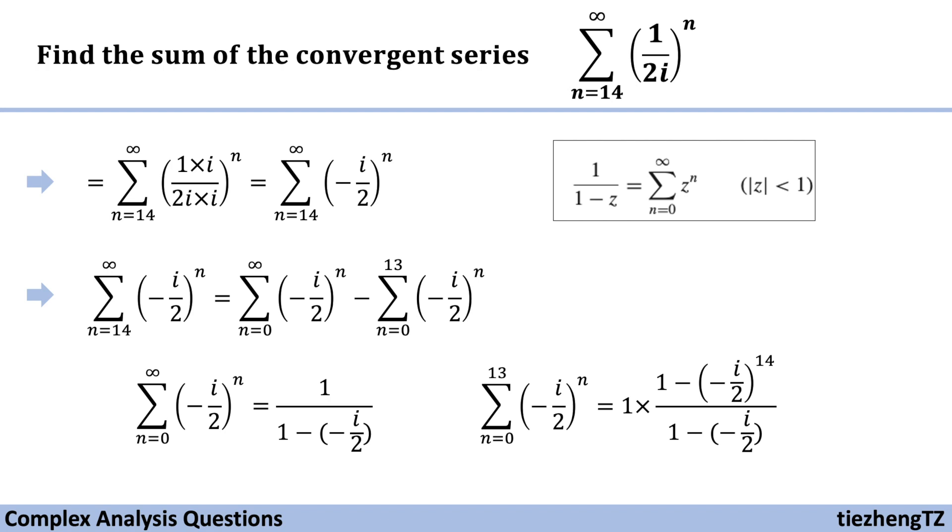To figure out the sum of this geometric series starting from 0 to 13, it becomes the first term 1 times 1 minus minus the ratio to the power of the total number of the terms which is 14, because it's from 0 to 13 so there is a total of 14 terms, and then over 1 minus the ratio which is minus half i.